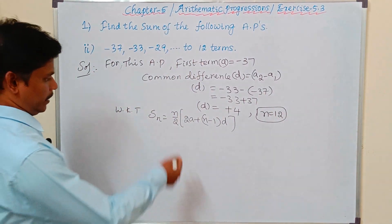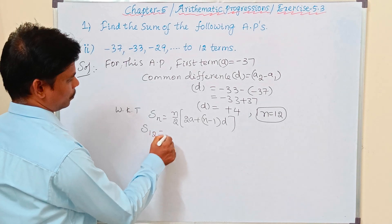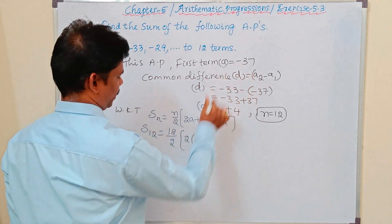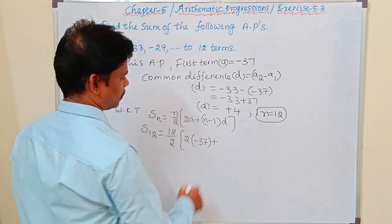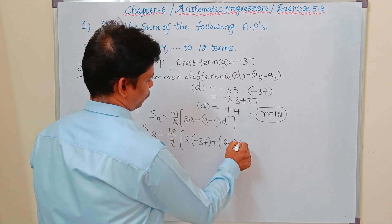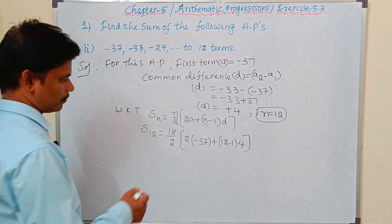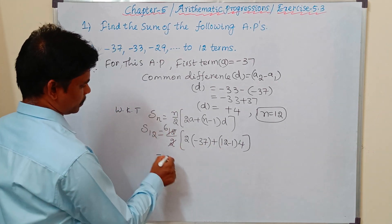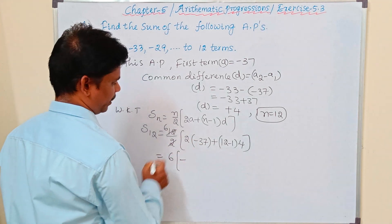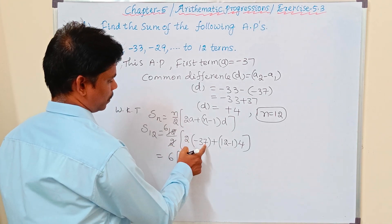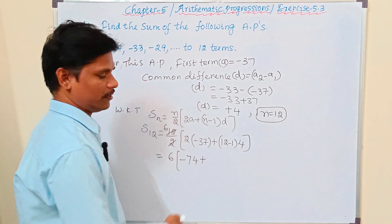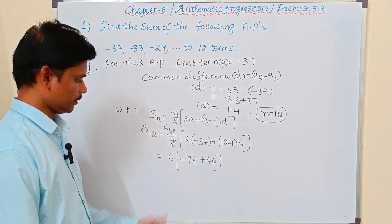Substituting into the formula: S12 = 12/2 × (2×(−37) + (12−1)×4) = 6 × (−74 + 11×4) = 6 × (−74 + 44).